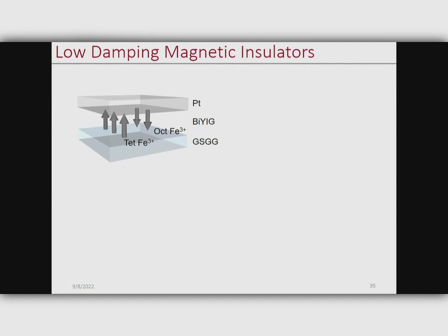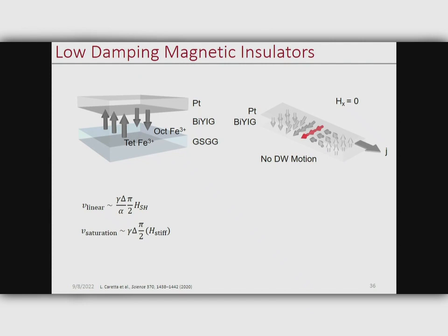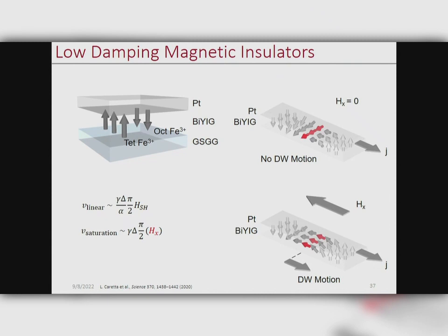The material system we chose to investigate is bismuth-substituted YIG — we get rid of the rare earth because it increases the damping. The advantages are PMA, it's somewhat compensated as a ferrimagnet, and it has much lower damping than other rare earth iron garnets. One challenge is that we have a very hard time introducing DMI into this system, meaning the domain walls are intrinsically immobile in a Bloch configuration and won't feel the spin-orbit torque. But we can cheat: we apply a small in-plane field larger than the domain wall anisotropy to rotate the Bloch wall to a Néel configuration while not affecting the bulk domains.